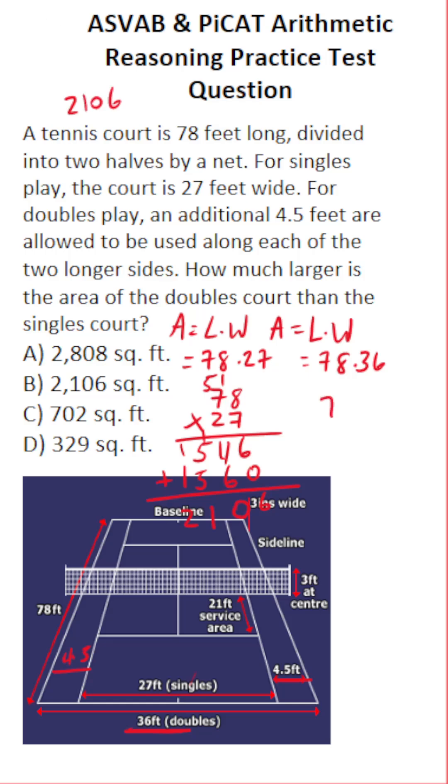Let's do this math over here. We have 78 times 36. Eight times six is going to be 48. Carry a four. Seven times six, 42, 43, 44, 45, 46. Add a zero placeholder. Eight times three is 24. Carry a two. Seven times three is 21, 22, 23. Let's add this up now. Eight. Again, this is 10. So carry a one, seven, eight, and then two. So the area of the doubles court is 2,808.